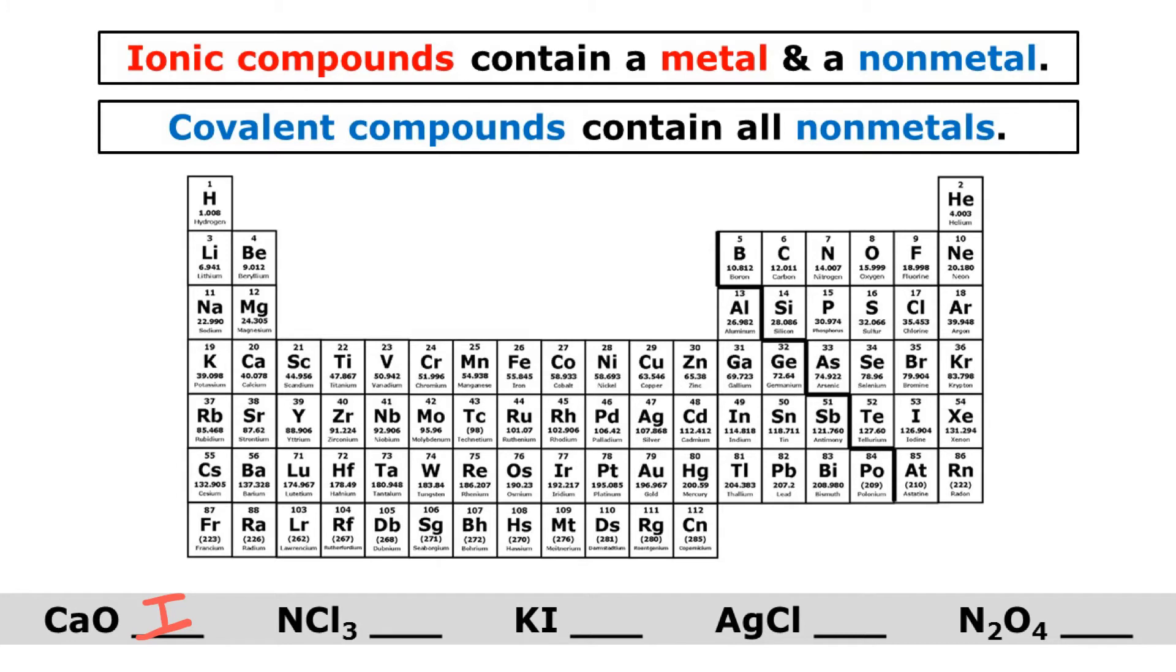NCl3 is next, nitrogen trichloride. So I have nitrogen and chlorine, and because nitrogen and chlorine are both non-metals, NCl3 is a covalent compound.